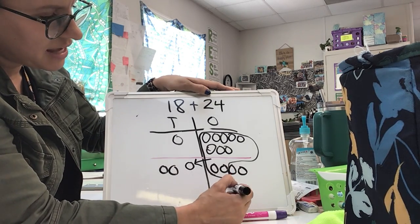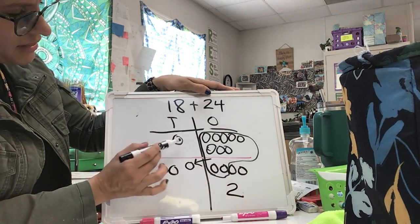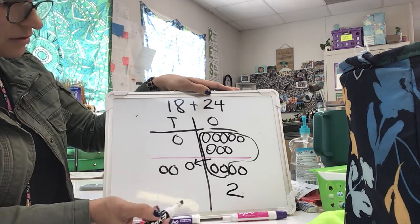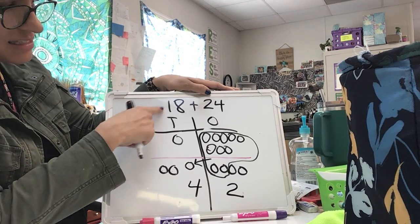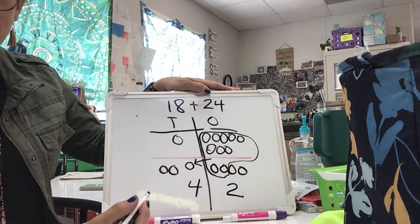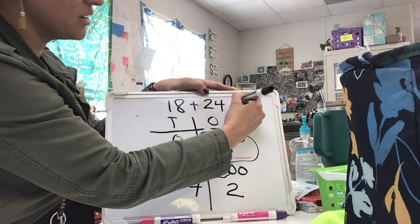If I look and I see what's left, I have two over here, and then I've got 1, 2, 3, 4, 4 in my tens place. So the sum of 18 plus 24 is 42 using my place value chart.